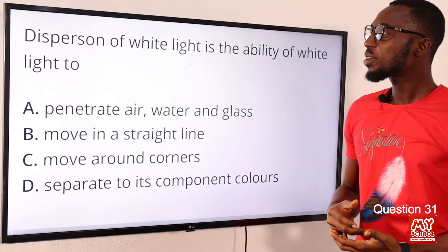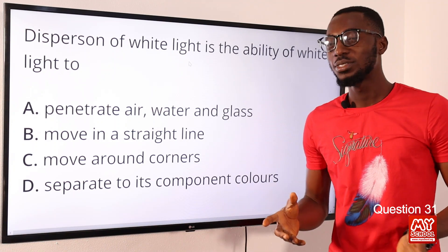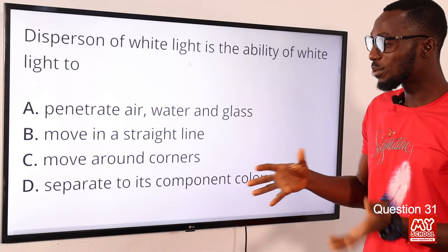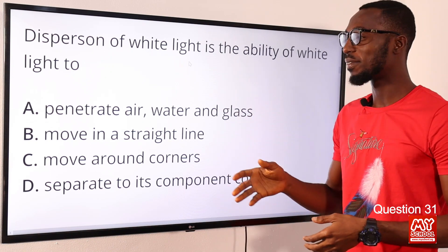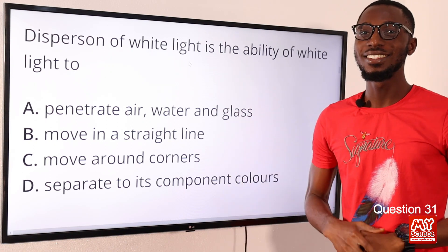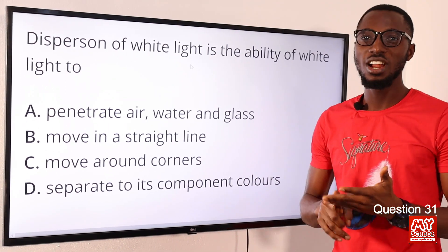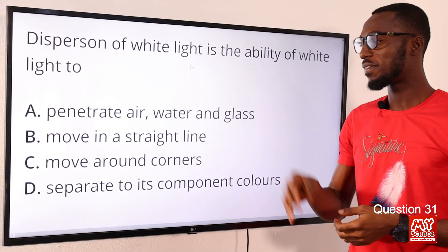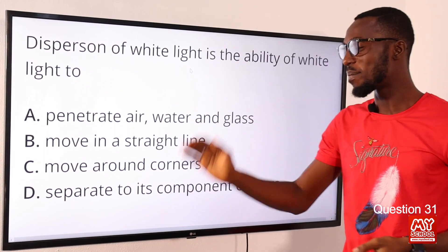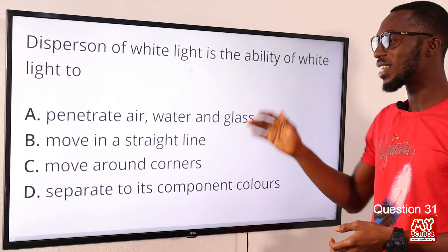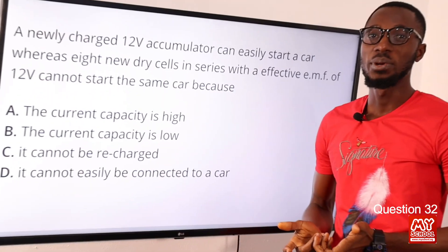Question 31: Dispersion of white light is the ability of white light to separate into its component colors — red, orange, yellow, green, blue, indigo, and violet (ROYGBIV). This was first demonstrated by Sir Isaac Newton. The dispersion of white light is the ability of white light to separate into its component colors. Option D is the correct option.